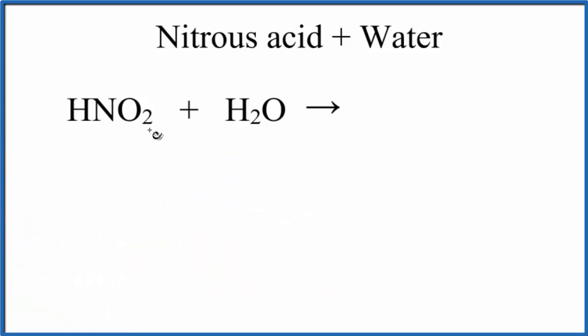Because it's weak, it's going to only partially break apart or dissociate into its ions. So hydrogen has a 1 plus ionic charge. NO2, the nitrite ion, has a 1 minus. You could look that up on a table of common ions or just have it memorized.